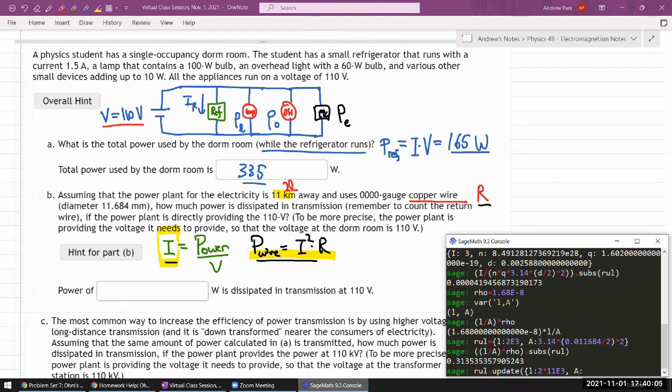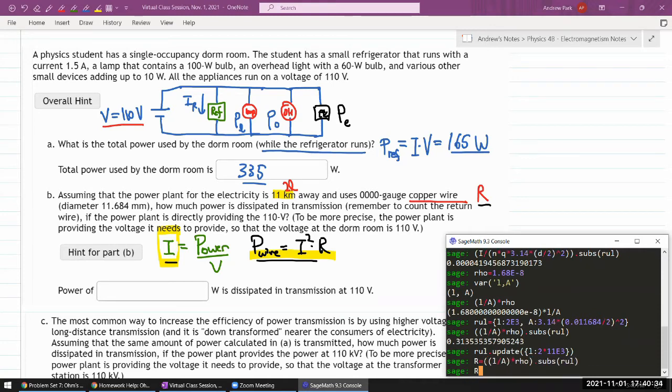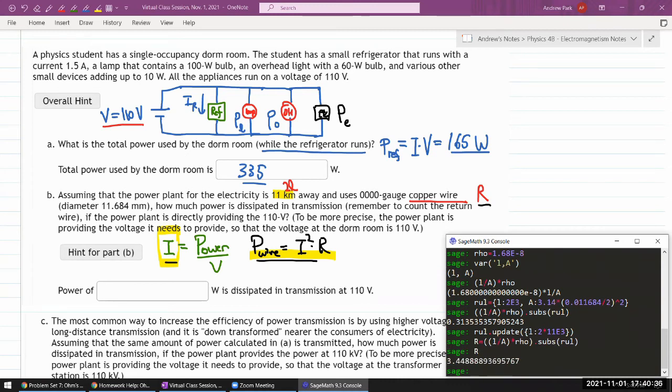And the area will be, oh, area won't have changed because it's the same gauge. Diameter 11.684 millimeter. So let me just update the length. So this is one of the benefits of using SageMath. It remembers quantities, and you can reuse some of the things you've already had. So update the length. And so this quantity would be the resistance. So let me put this in as the resistance and make sure the number is reasonable, about 3.45 ohm.